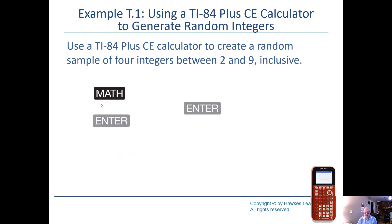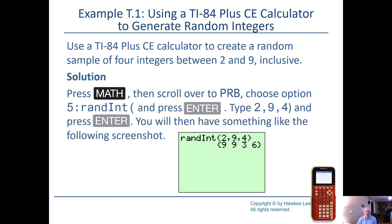So, if you want to create a random sample of four integers, and you want the smallest integer to be possibly a two, and the largest one to possibly be a nine, press the math key. Move over to the PRB, which stands for probability. Choose option number five. You don't have to cursor down, hit the enter. You can just hit the number five, pop, done.